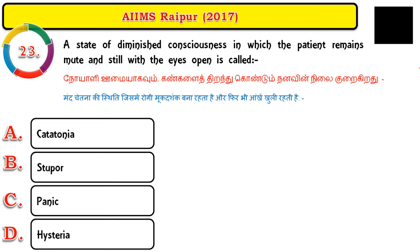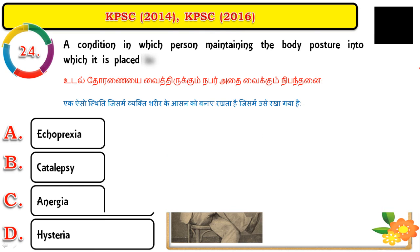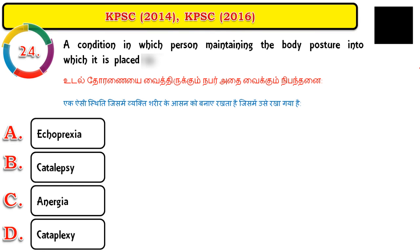Question number twenty-three: a state of diminished consciousness in which the patient remains mute and still with eyes open is called stupor. The person does not respond to surroundings but remains fully conscious.